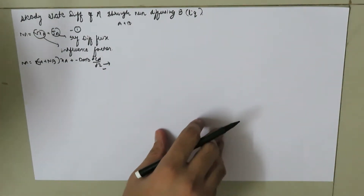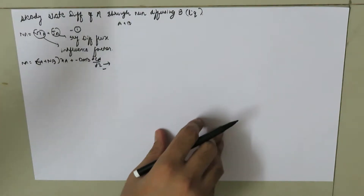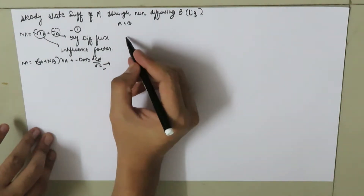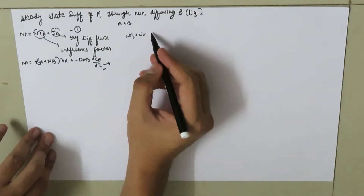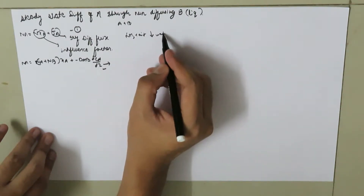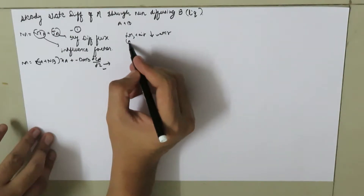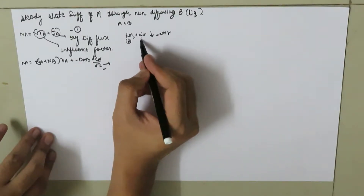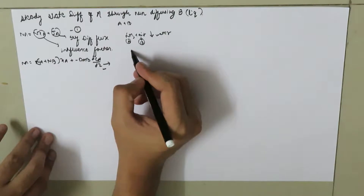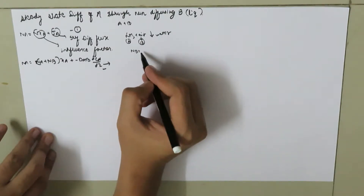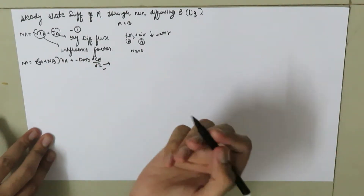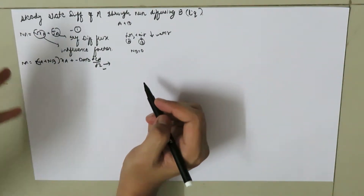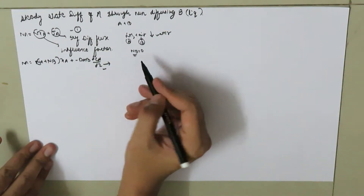In steady-state diffusion of A through non-diffusing B in the case of gases, we took an example of ammonia present in air being absorbed by water. There, ammonia was treated as component A and air as component B, and we set NB = 0. In very similar fashion, in the case of liquid, we are going to treat NB = 0.